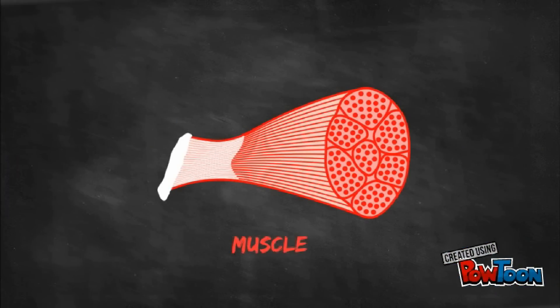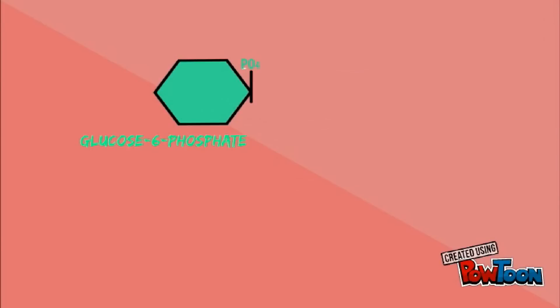However, in the muscles, glucose-6-phosphate cannot be sent into the blood because of the lack in the enzyme glucose-6-phosphatase. Instead, it enters glycolysis providing the energy needed for muscle contraction.